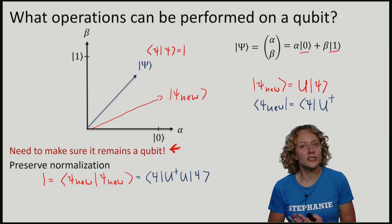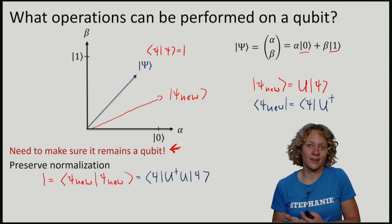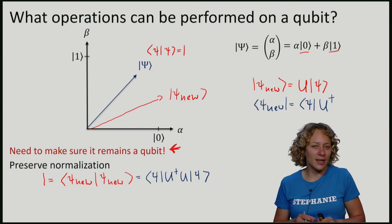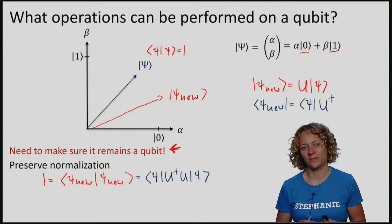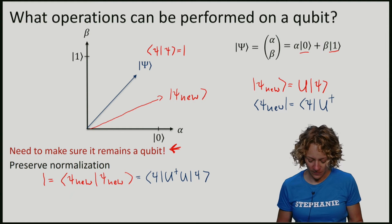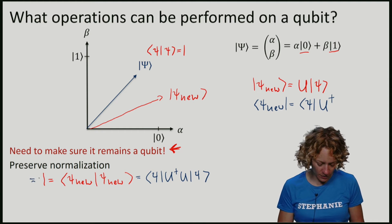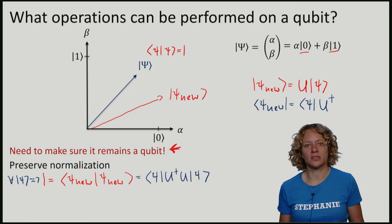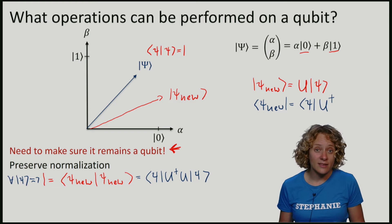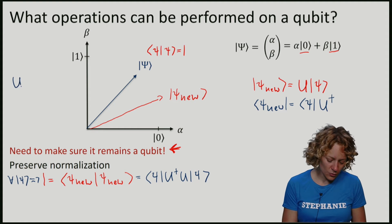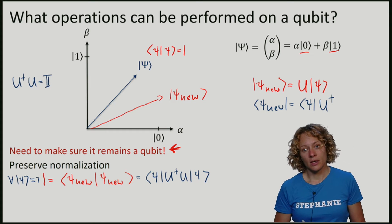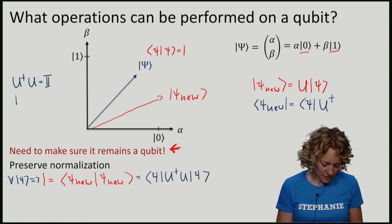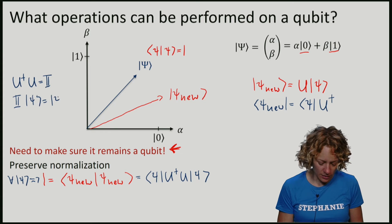We want our operation U to be independent of the vector. We would like to perform this operation on potentially any qubit that we start with. This means that this term here has to be 1 for all Psi that I start with, and this is only possible if U dagger U is equal to the identity matrix. The identity matrix means that I do nothing. Identity matrix applied to Psi gives me back the vector Psi.